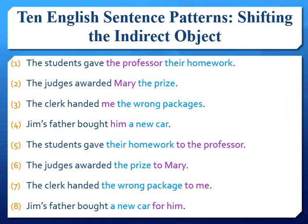We can shift the indirect object either before the direct object or after the direct object. If the indirect object is shifted after the direct object, then the preposition 'to' will precede the indirect object, except in cases such as sentence eight that requires the preposition 'for' instead. For example, the indirect object 'the professor' is shifted after the direct object 'their homework,' preceded by the preposition 'to' in sentence five. Whereas the indirect object 'the professor' cannot be preceded by 'to' when it is shifted before the direct object.